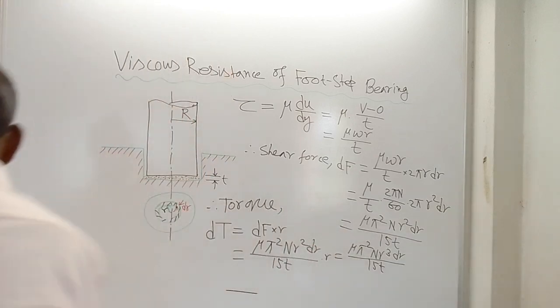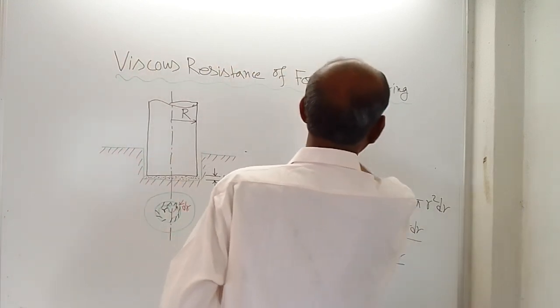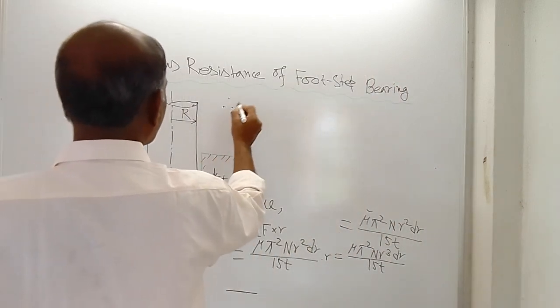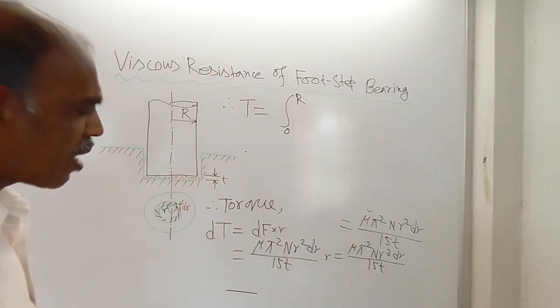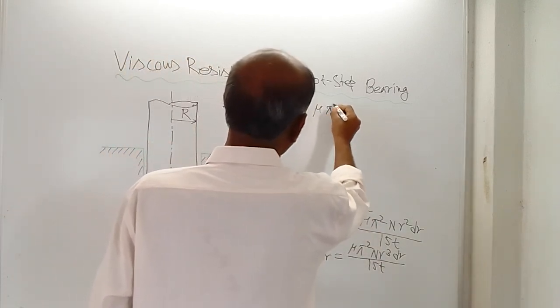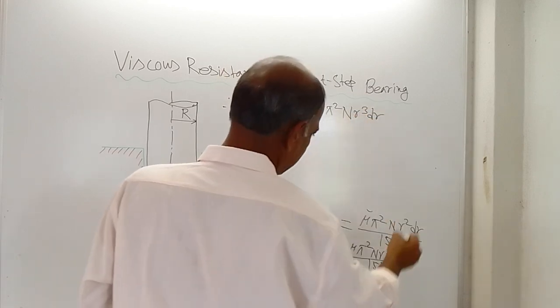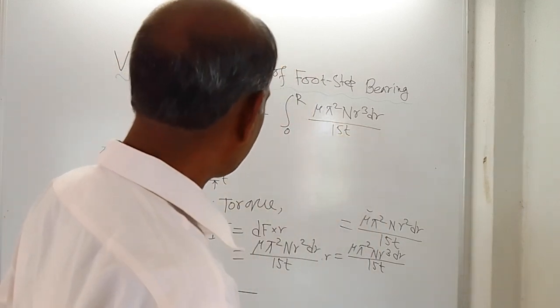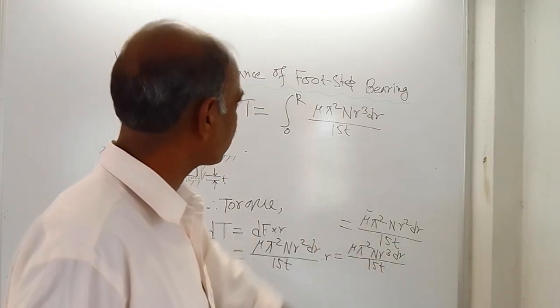Now to get the total torque, you have to integrate this result. You have to integrate this expression for dt to get the total torque. Therefore, total torque T is equal to integration from 0 to capital R, where R is the radius of the shaft, and it is μ π² n r³ dr / 15t.